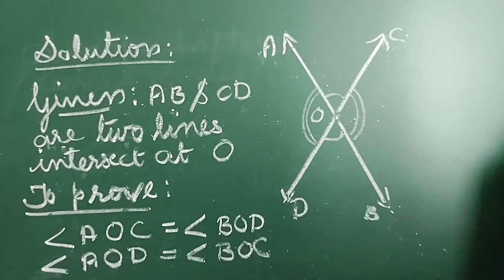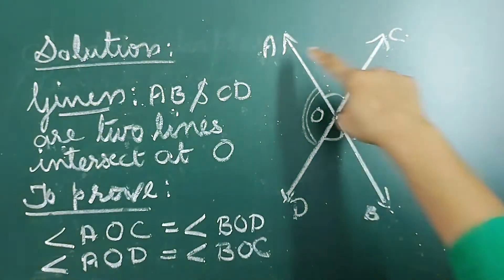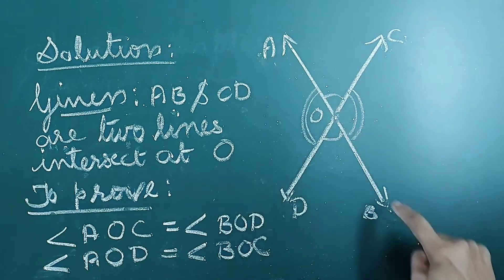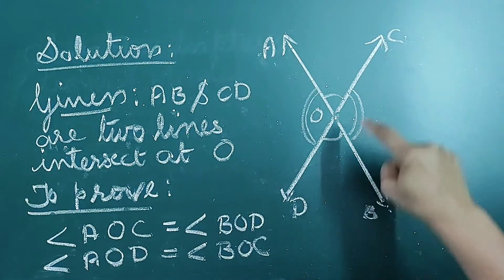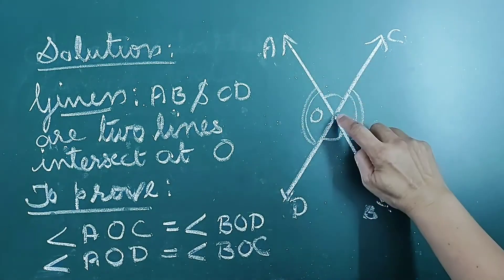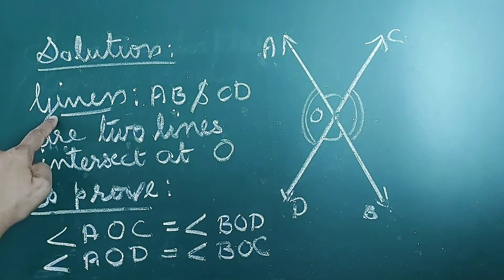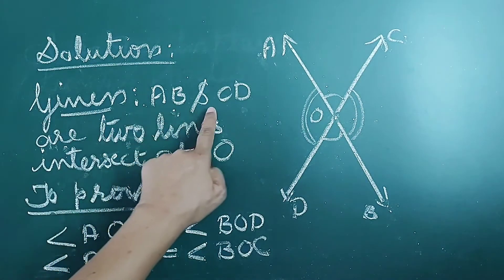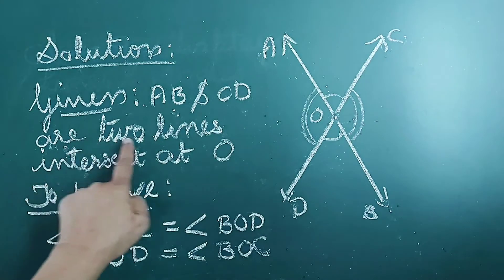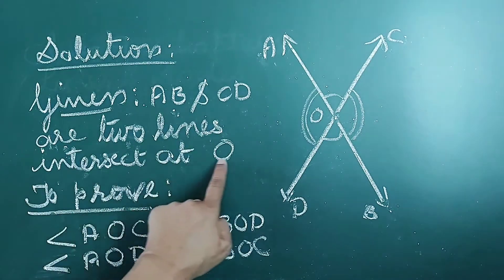To prove this theorem, we first consider two lines: line AB and line CD, which intersect at a point O. The given part of the solution is: AB and CD are two lines that intersect at O.